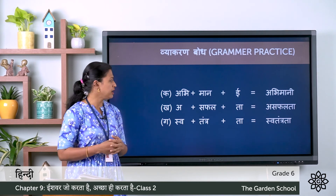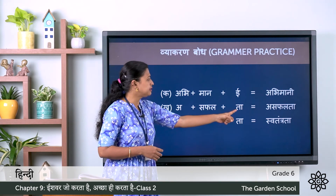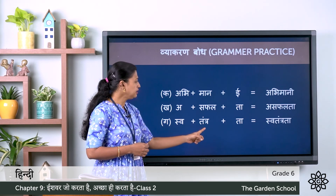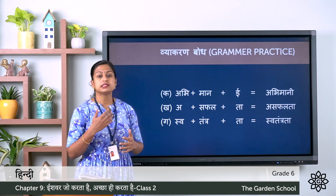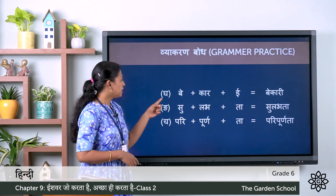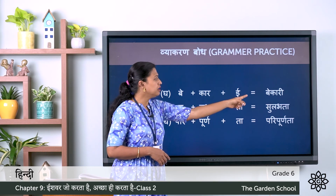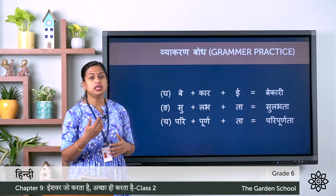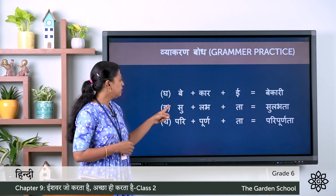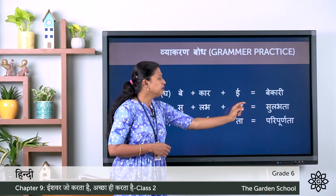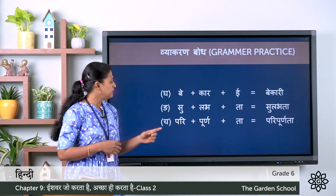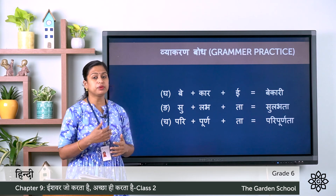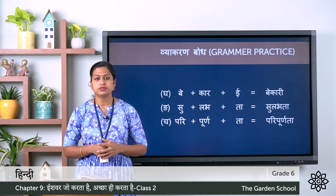The answers for the remaining upsarg-pratyae exercise: Kha: a plus safal plus taa gives asafalta. Gha: sva plus tantra plus taa gives swatantrata. Gha: be plus kaar plus ee gives bekari. Ngha: su plus labh plus taa gives sulabta. Chha: pari plus poorn plus taa gives paripoornata. This completes the third exercise.